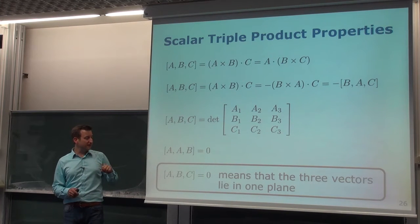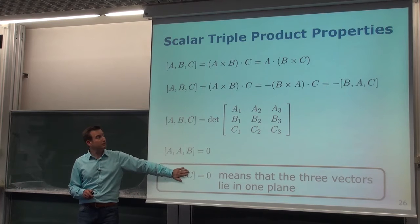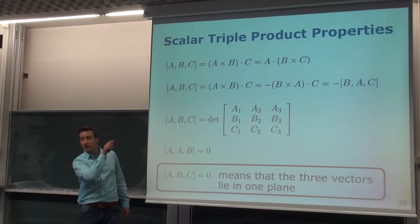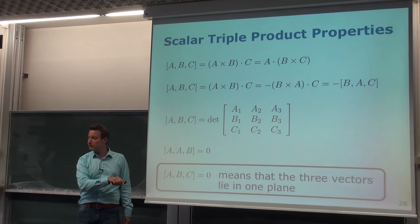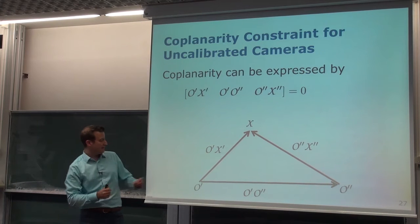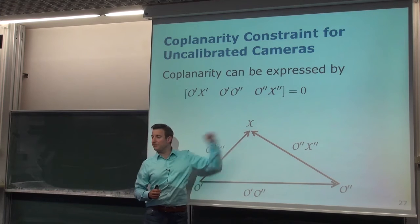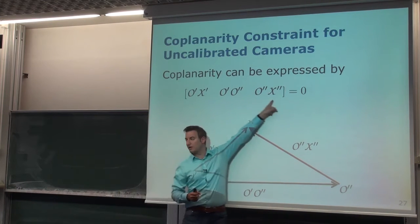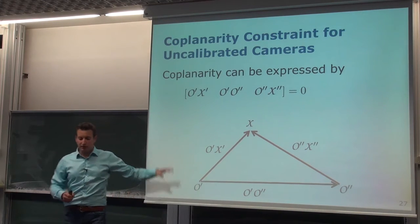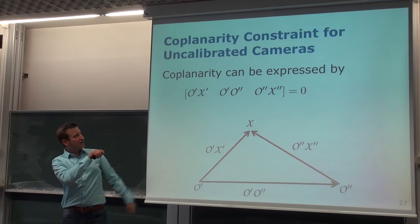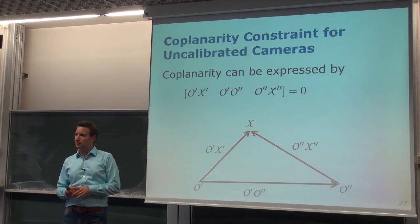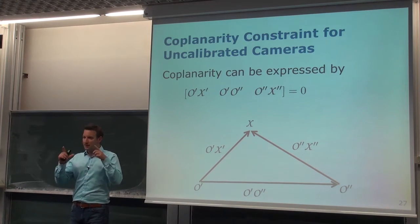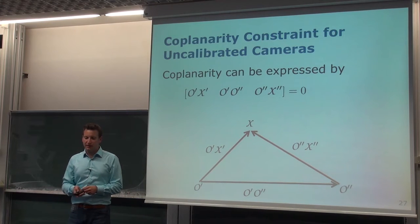To summarize: if we have corresponding points, then these three vectors must lie in one plane, so the scalar triple product must equal zero. This is the coplanarity constraint we are going to exploit. If the points are corresponding, these three vectors have to lie in a plane.